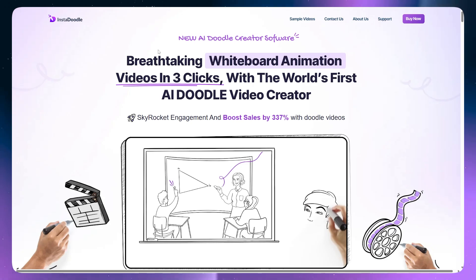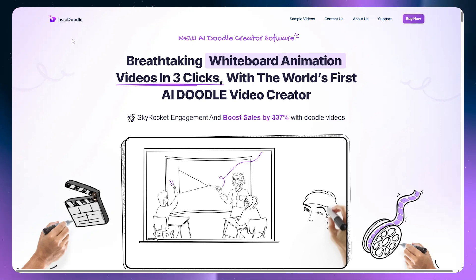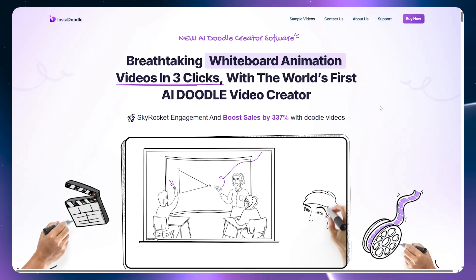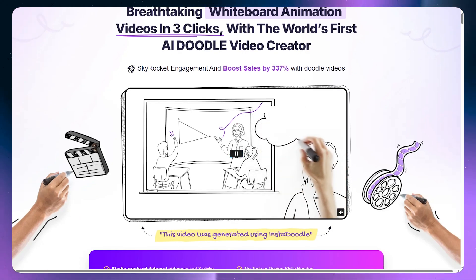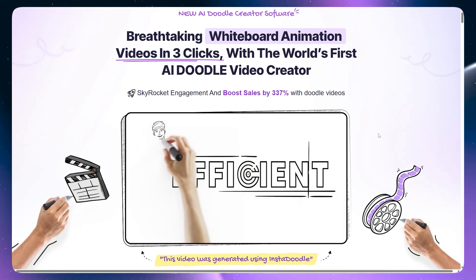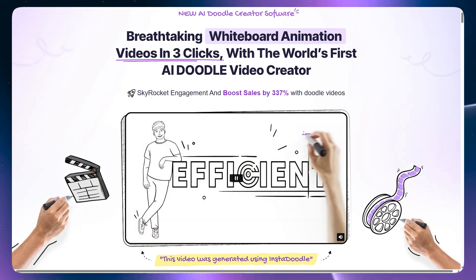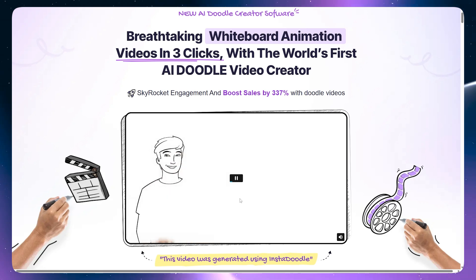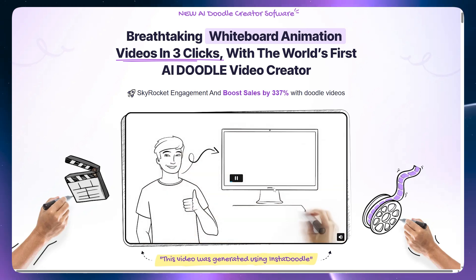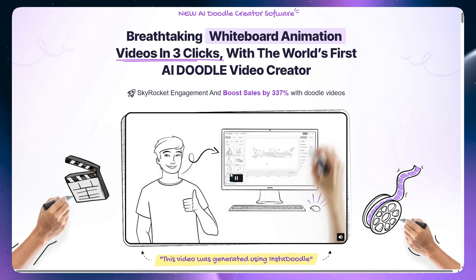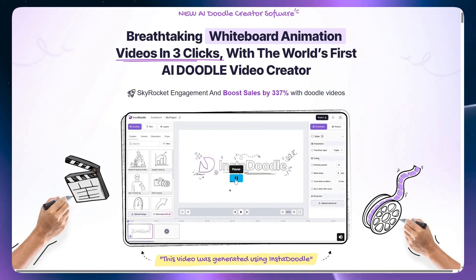The first thing I want you to do is use the links in the description to go to the Insadoodle website and get exclusive offers. Insadoodle is the new AI Doodle creator software that enables you to create videos like this easily. If you're watching informative content on YouTube, you might have already come across this animation style. This is most effective with informative content, and you can also see it on other social media platforms.